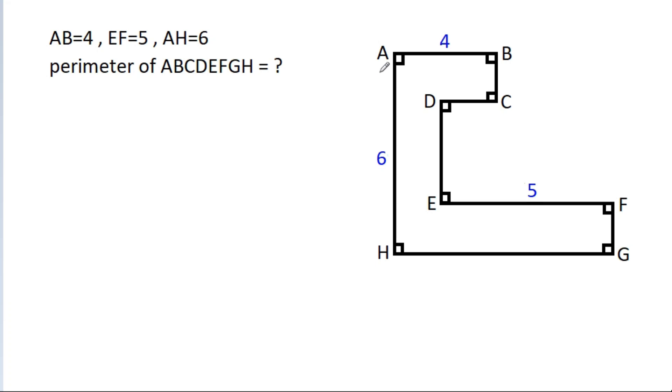In this video, we have given that AB is 4, EF is 5, and AH is 6. Then we have to find the perimeter of ABCDEFGH.